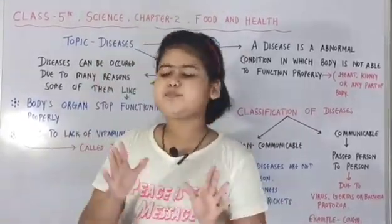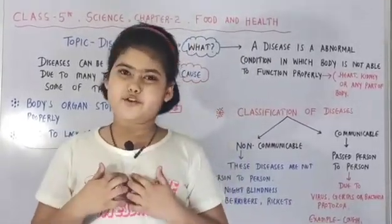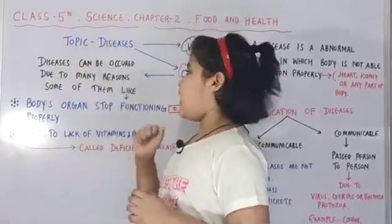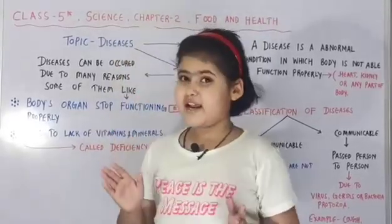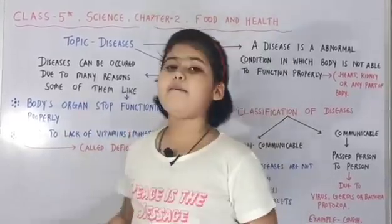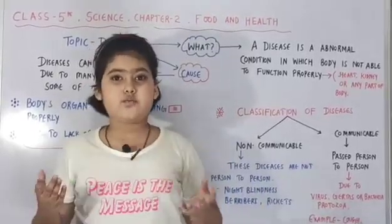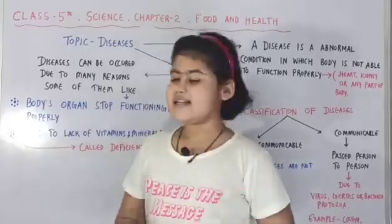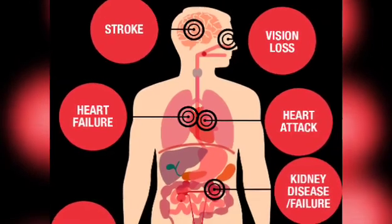What are the causes of diseases? Diseases can occur due to many reasons. The first reason is that body organs stop functioning properly — our body organs cannot work and function properly. For better understanding, see this video.